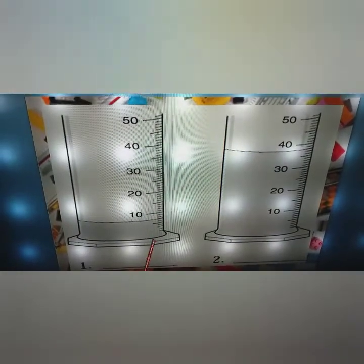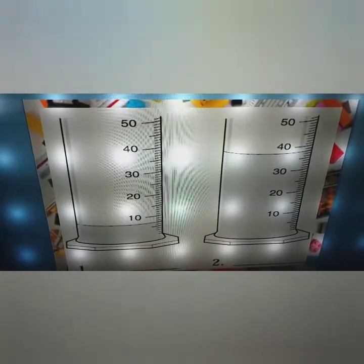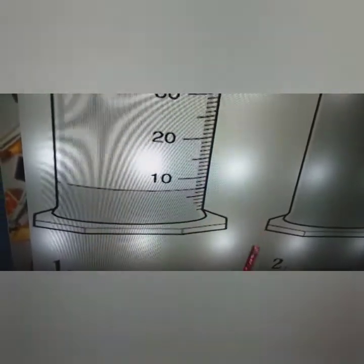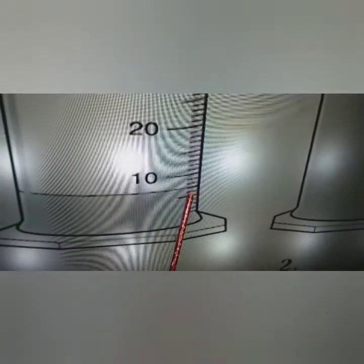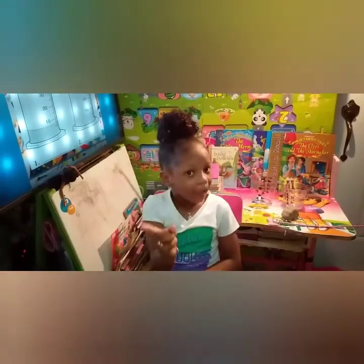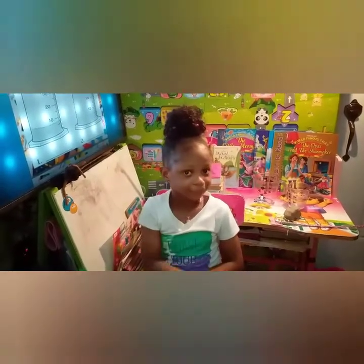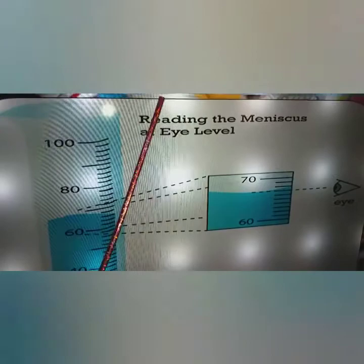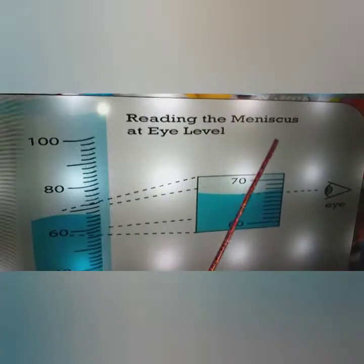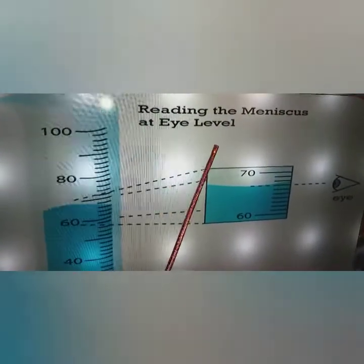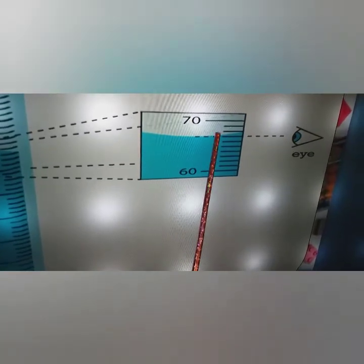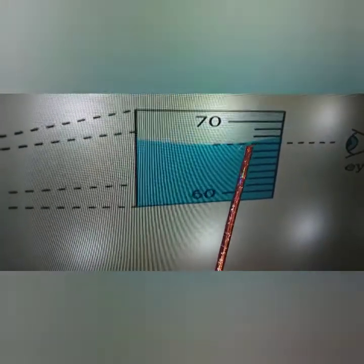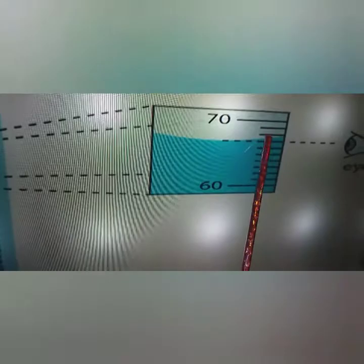Here I have a picture of two measuring cylinders. Each of these marks represents one unit — we are counting by one. Note, every cylinder is different. To find the volume, you must read the meniscus at eye level. Put your eye exactly at the line.